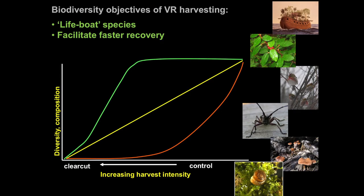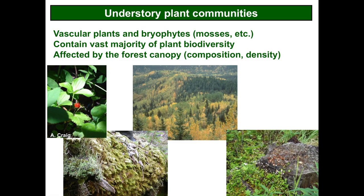We were hoping for that top green line where we could take out a fair bit of timber and have absolutely no negative impacts on biodiversity, or something close to that. Now, understory plant communities — this includes both vascular plants and bryophytes, which are mosses, hornworts, and liverworts — contain the vast majority of plant diversity in these northern forests. We only have like four tree species in Alberta, not very many, but we have a lot more species in the understory. They're affected by the forest canopy: the composition, age, and structure of the canopy influences the understory plant communities, so we expect them to respond to forest harvesting.